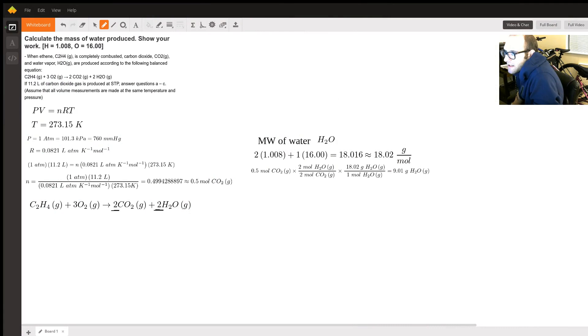When ethene C2H4 gas is completely combusted, carbon dioxide, which is CO2 gas, and water vapor, H2O gas, are produced according to the following balanced equation. One mole of C2H4 plus three moles of O2 yields two moles of CO2 plus two moles of H2O gas, water vapor.